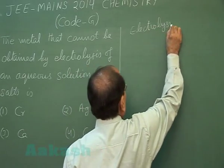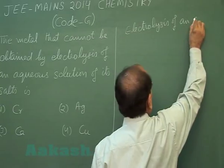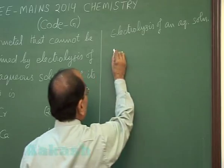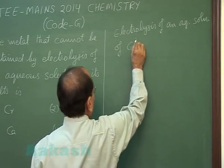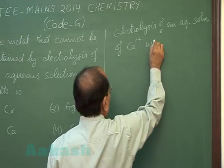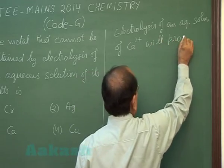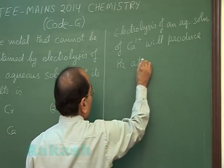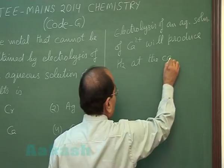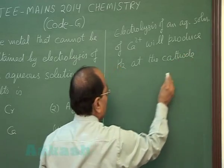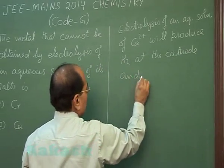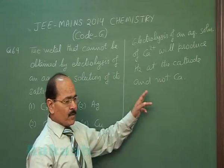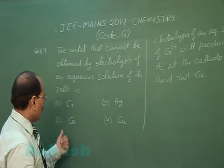Electrolysis of an aqueous solution of calcium ion will produce hydrogen at the cathode and not calcium. Therefore, the correct answer is option 3.